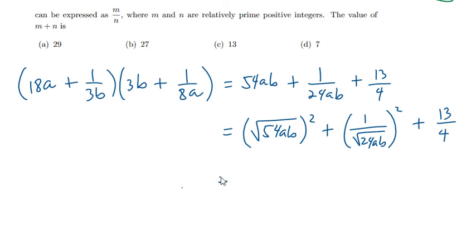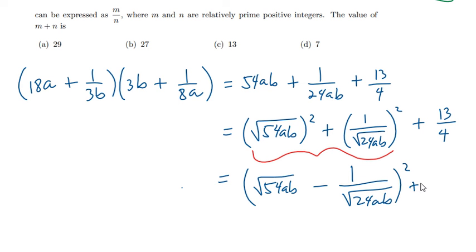Now, observe further that this is equivalent to the square of the difference (√(54ab) - 1/√(24ab))² plus 3. If you expand this, you will find out that this is actually equivalent to the expression above.